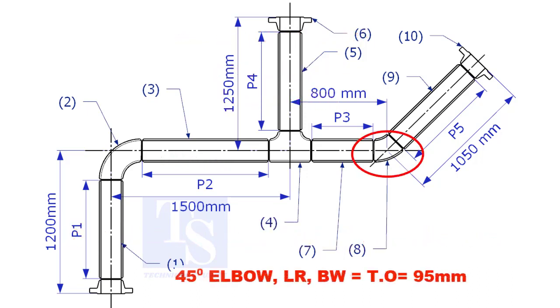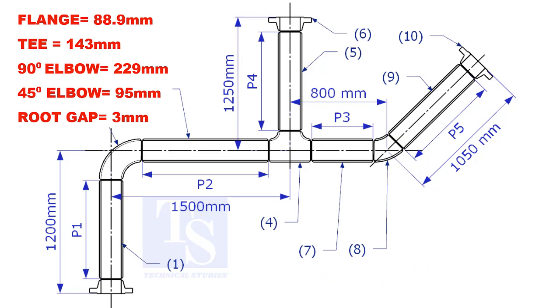Takeoff length of the 45 degree elbow is 95 millimeters. The true lengths of pipes P3, P4, and P5 are given. You can cross-check if the answers are correct or not.